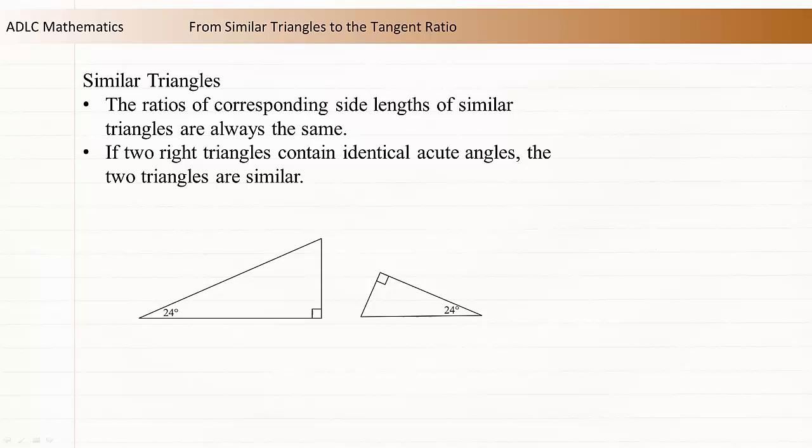Let's look at why this is true. Here are two right triangles, each with a 24 degree angle. Because they're right triangles, we also know that each includes a 90 degree angle. We also know that the three angles in any triangle sum to 180 degrees, so the only possibility for the third angle is 66 degrees.